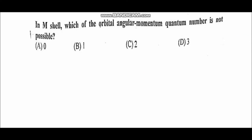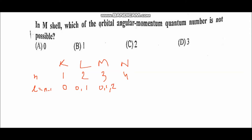Next question: in the M shell, which orbital angular momentum quantum number is not possible? The atomic shells are K, L, M, N with principal quantum numbers 1, 2, 3, 4 respectively. For the M shell, n = 3, so l can take values 0, 1, and 2. It cannot take the value l = 3. Therefore, option D is the correct answer.